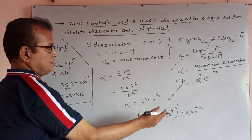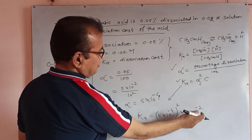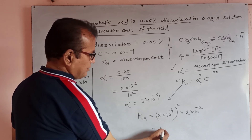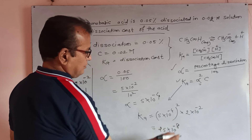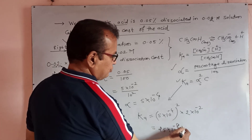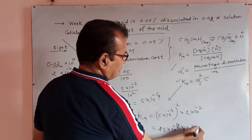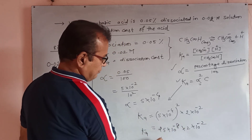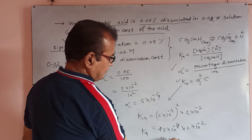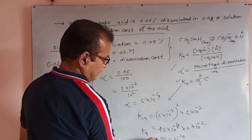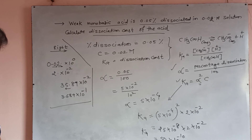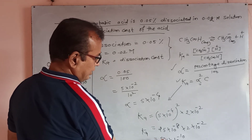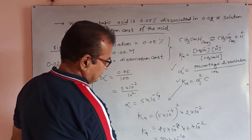So 0.02 means 2 × 10⁻². When we square (5 × 10⁻⁴), we get 25 × 10⁻⁸. Then multiplying by 2 × 10⁻², we get 25 × 2 = 50, so Ka equals 50 × 10⁻¹⁰. Since 50 is not in standard form, we note that the decimal point must be placed after the first digit when writing in scientific notation.